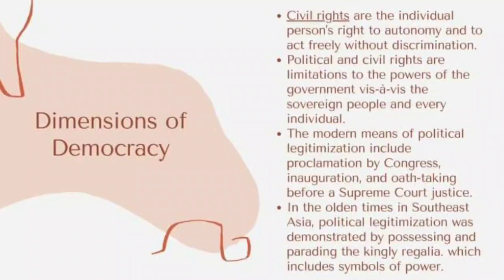The modern means of political legitimization includes proclamation by Congress and inauguration and oath-taking before a Supreme Court Justice. In olden times in Southeast Asia, political legitimization was demonstrated by possessing and parading the kingly regalia, which includes symbols of power — showing the king and queen's authority through symbols of their power.